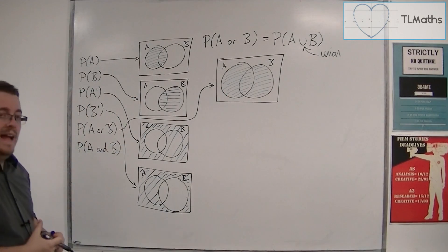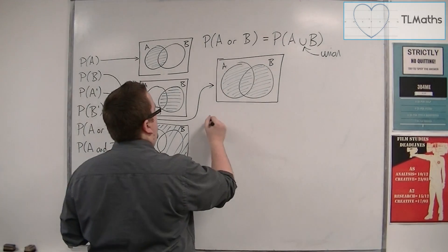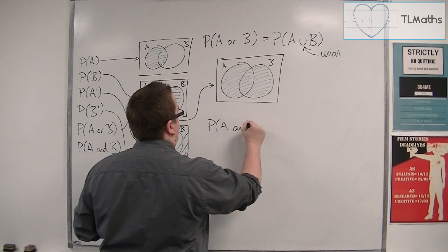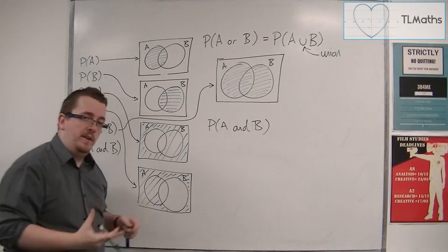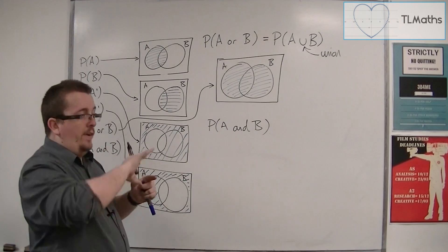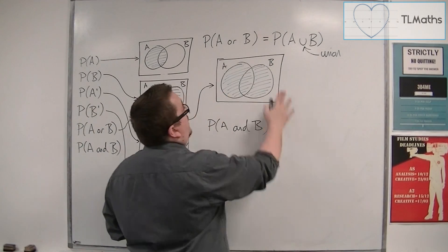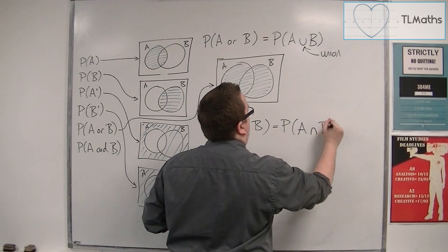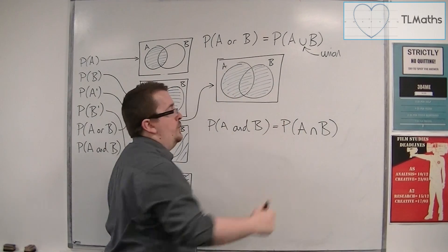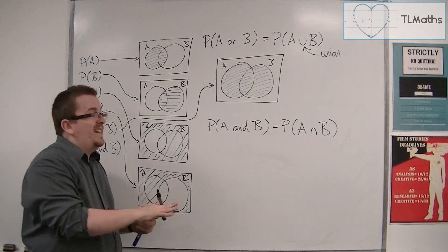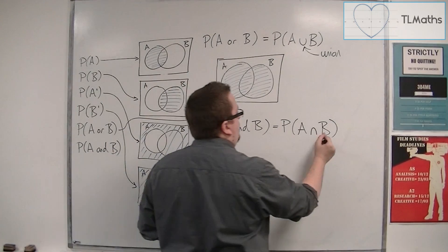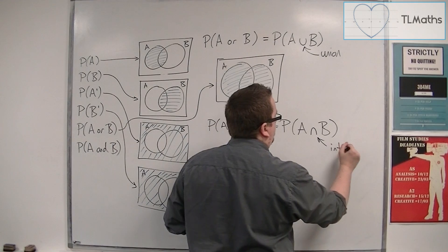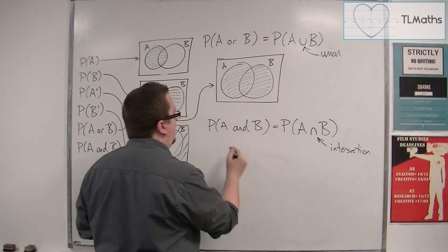Then if we're looking at A and B, so the probability of A and B happening, the probability of them both happening effectively, we have another notation as well for this. And so instead of the union, we call this the intersection, and we use an upside-down union symbol. So it's like an N, and we refer to that as the intersection. So it's where the circles intersect.